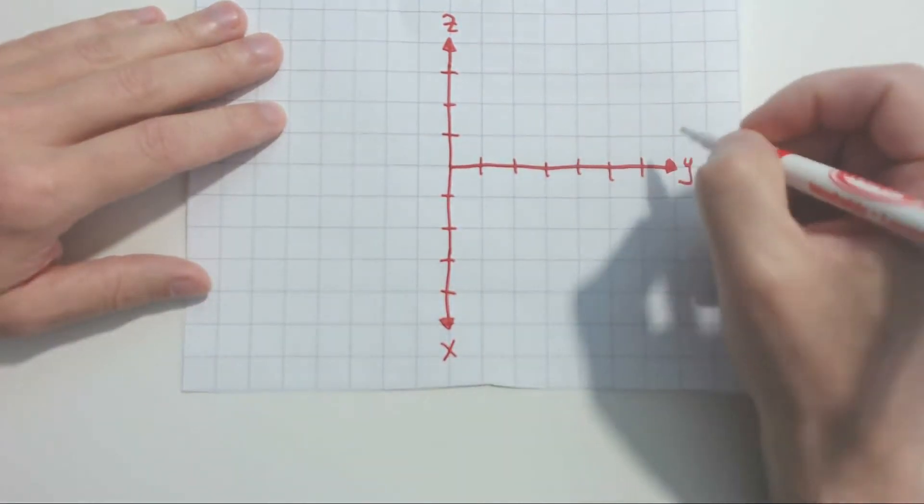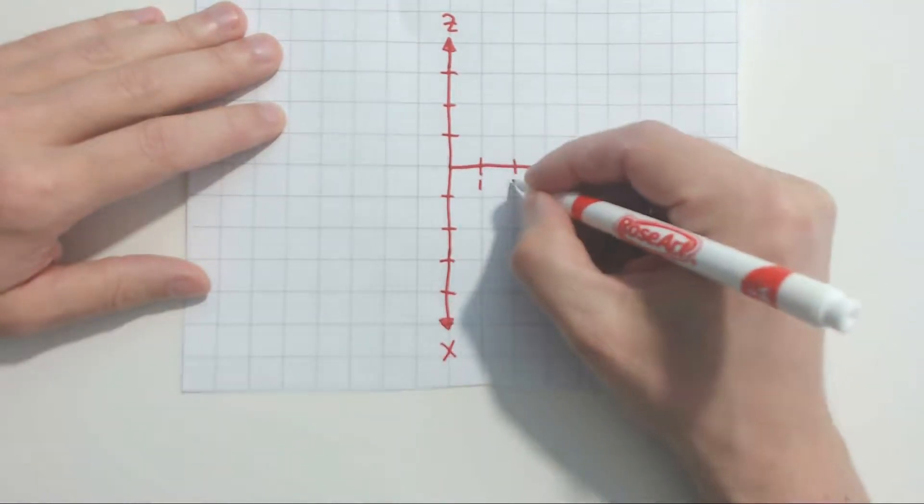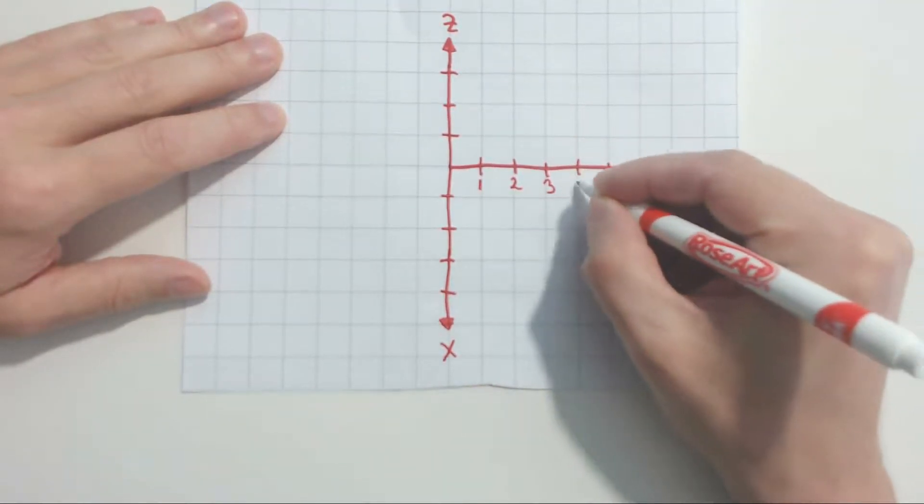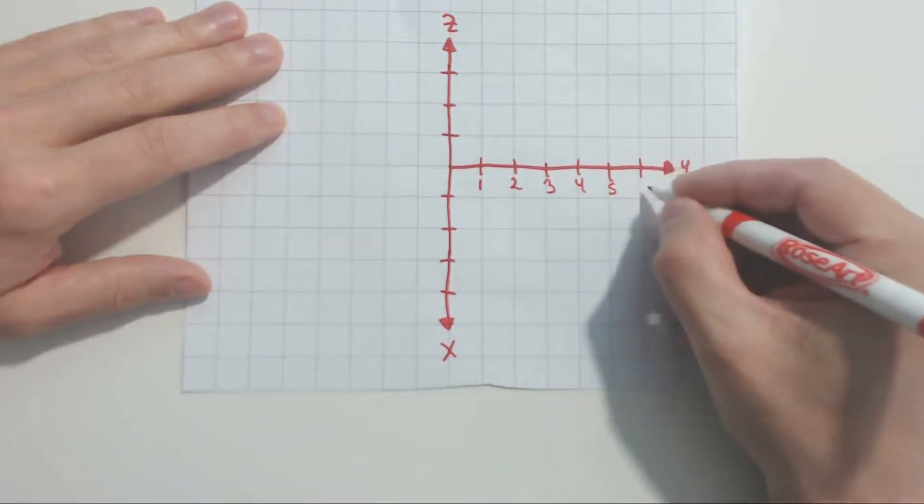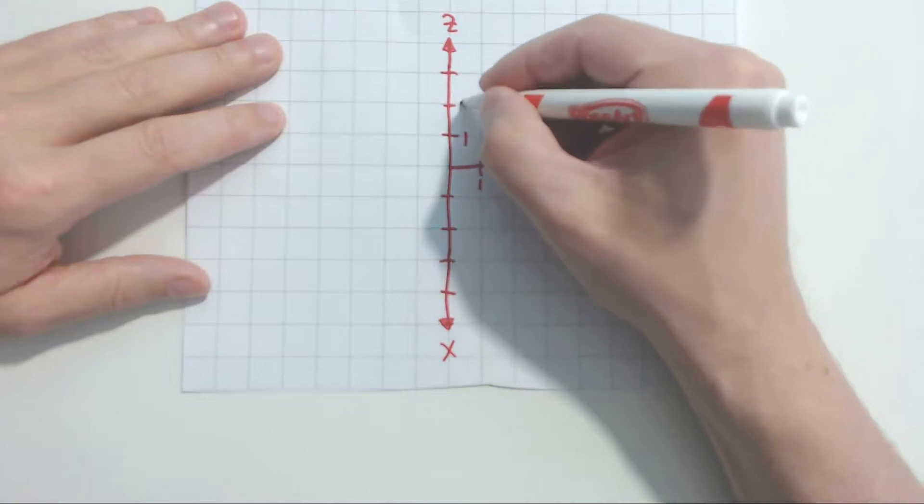Put in some numbers. So I'm going to mark up values along the Y axis. I'm going to say 1, 2, 3, 4, 5, and then 6. Do that along the Z axis. I'm going to call this 1, 2, 3.